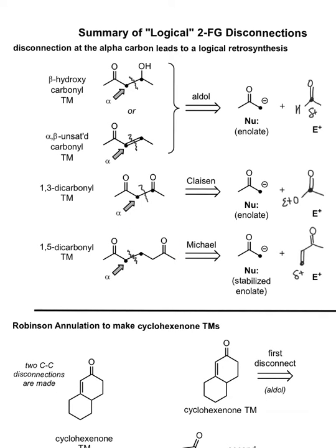Looking at the overall theme here: in every case, we're focusing on that alpha carbon, because that is the logical place for a disconnection, giving us an enolate nucleophile. The only thing that's varying in each case is the electrophile it's reacting with. If we use a carbonyl, that's the aldol reaction. If we use an ester, that's the Claisen condensation. And if we use the alpha-beta-unsaturated carbonyl, that's the Michael reaction.